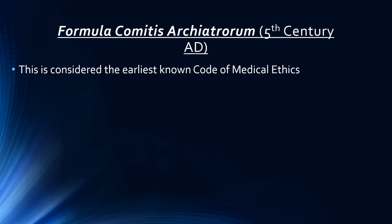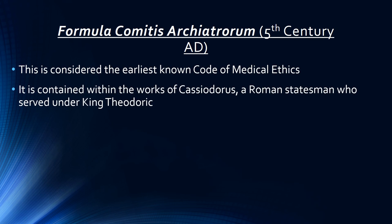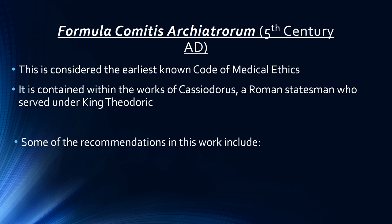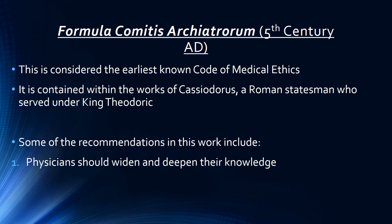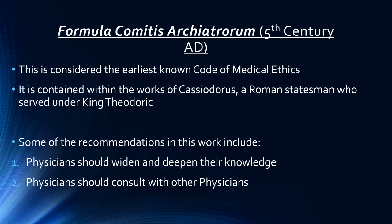The Formula Comitis Archiatrorum is considered the earliest known code of medical ethics. It is contained within the works of Cassiodorus, a Roman statesman who served under King Theodoric. Some of the recommendations include: physicians should widen and deepen their knowledge, and physicians should consult with other physicians.